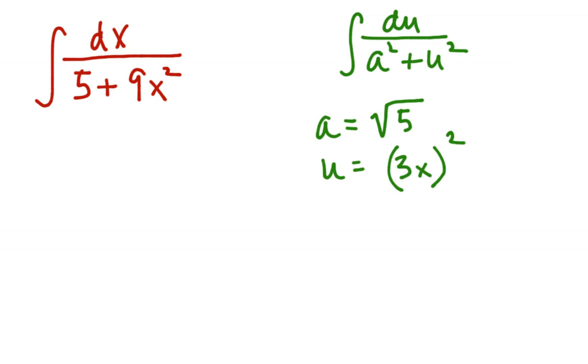All right, so when I looked at my pattern, du all over a squared plus u squared, that was equal to 1 over a arctan u over a plus c. So do I have this a and my u all set? So now it's a matter of taking things apart and putting it in this format.